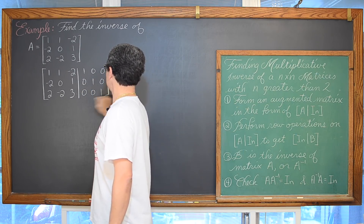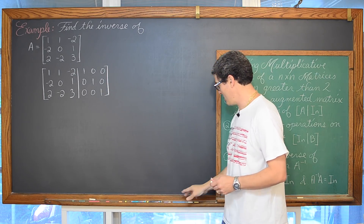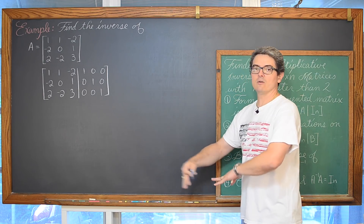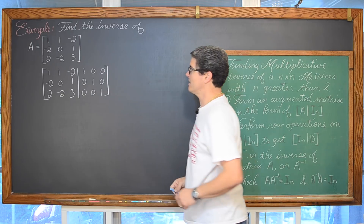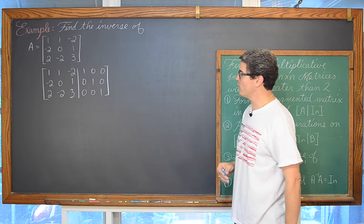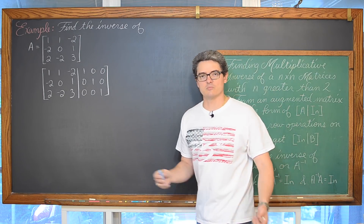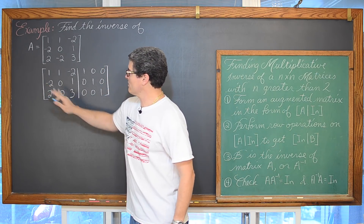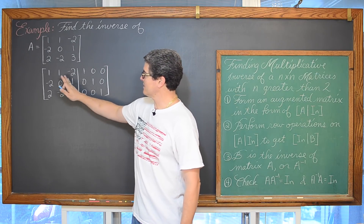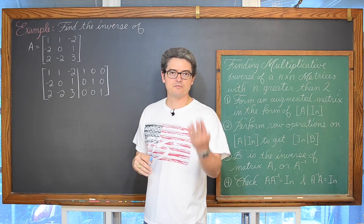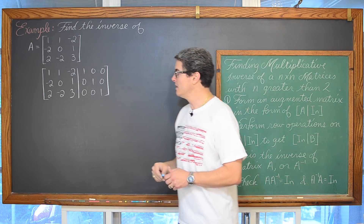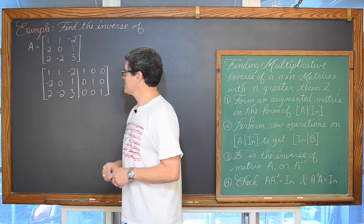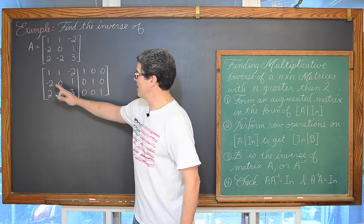It is very easy to make mistakes when you are working with these matrices. So I am going to be very meticulous in my work here, checking along the way to make sure I don't make a sign error or a basic arithmetic error. You should have already studied this when you were solving systems of equations using the Gaussian elimination process or the row operations process.